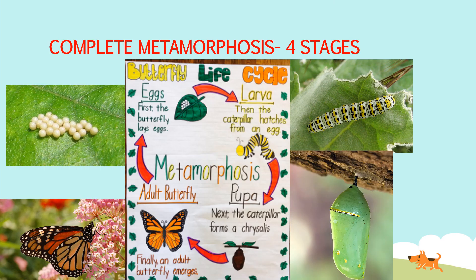Now let's look at the butterfly life cycle. The butterfly life cycle goes through a complete metamorphosis. Metamorphosis is the change in an animal's life. It is called complete metamorphosis because it has four distinct stages. Stage number one is eggs — this is the first stage. The butterfly lays eggs, leaving them on a leaf in this example.